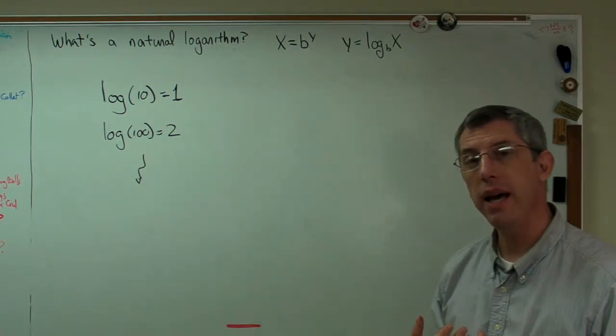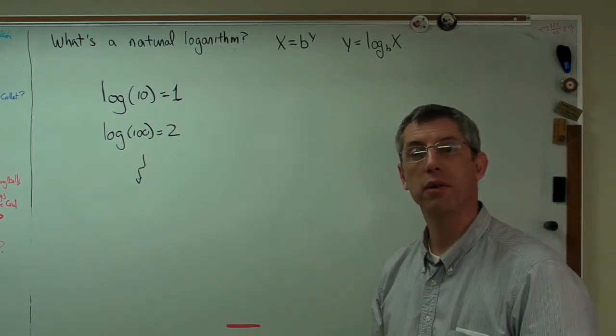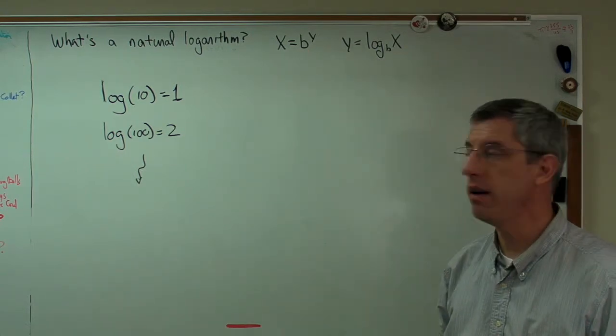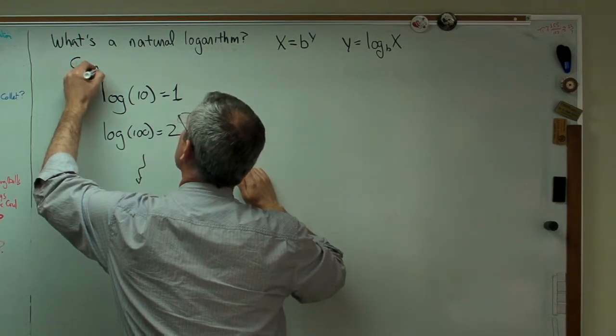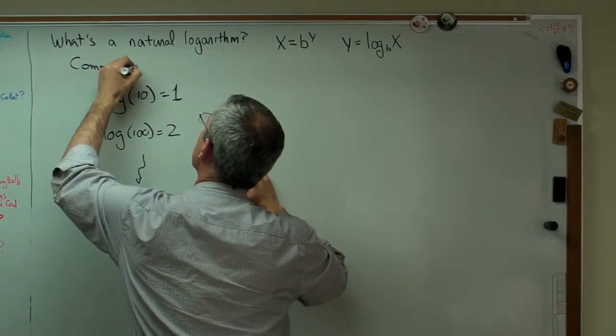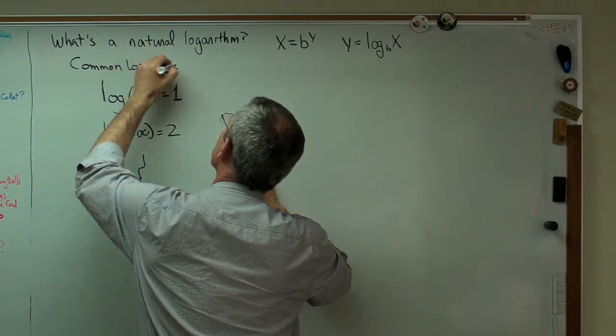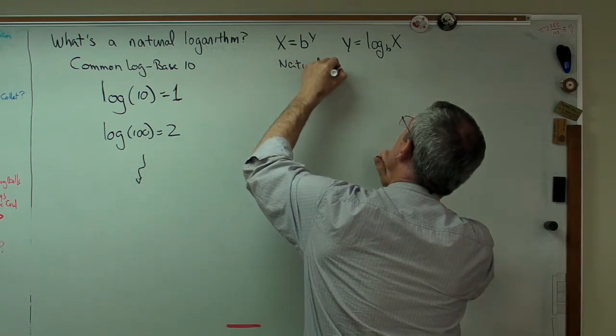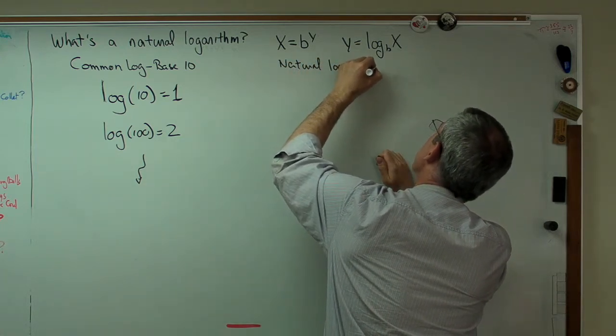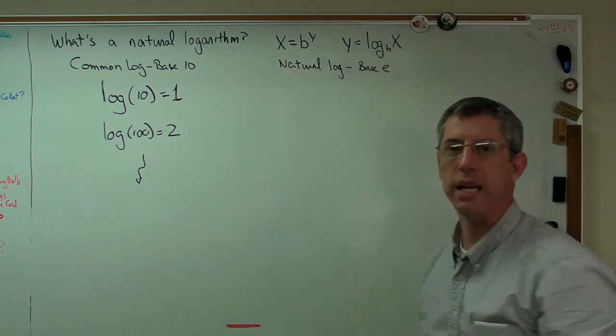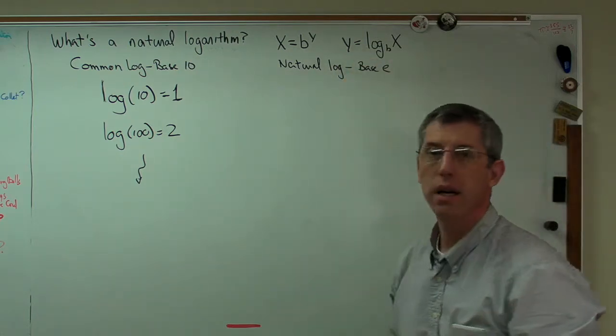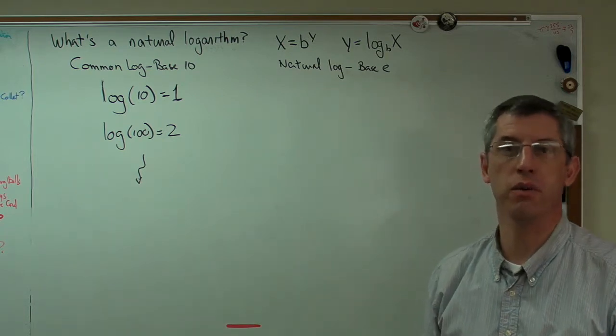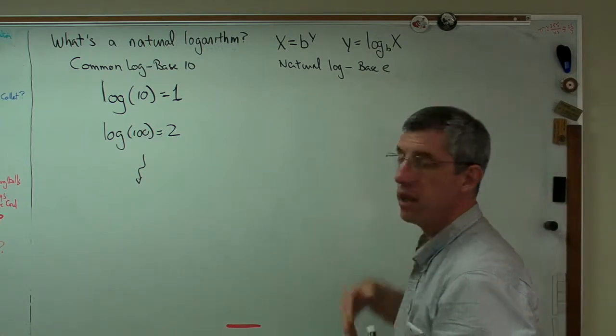Natural logarithms behave exactly the same way only they have a different base. Common logs have a base of 10. And a natural log is base E. Now E is a number that you wouldn't necessarily see in routine calculations although you see it written out as E. You won't see the numerical value written out very often. And it's just a number. It's a number like pi.